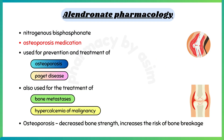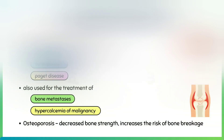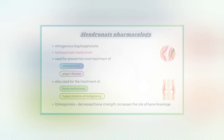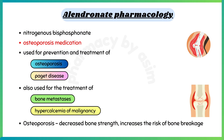Alendronate is a nitrogenous bisphosphonate, also known as an osteoporosis medication. It is used for prevention and treatment of osteoporosis and Paget disease, as well as for the treatment of bone cancer and hypercalcemia of malignancy. Osteoporosis is a condition where decreased bone strength increases the risk of bone breakage.